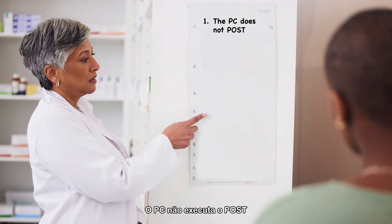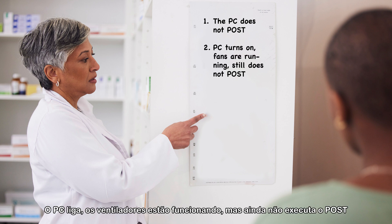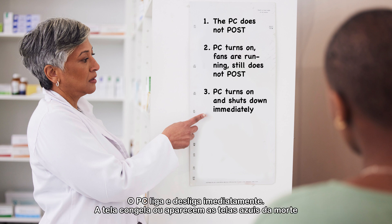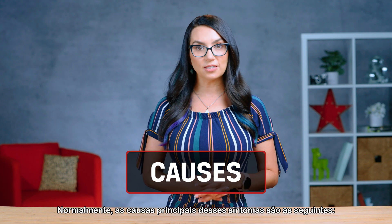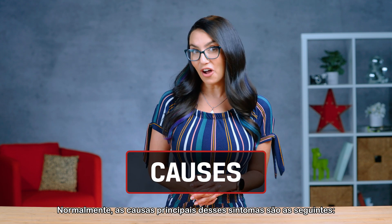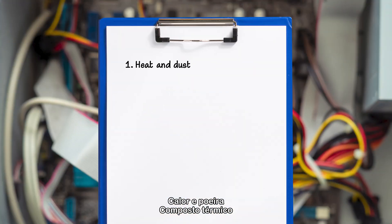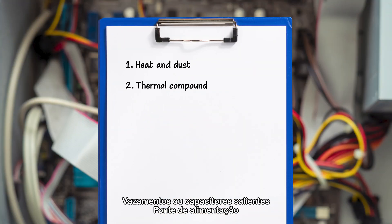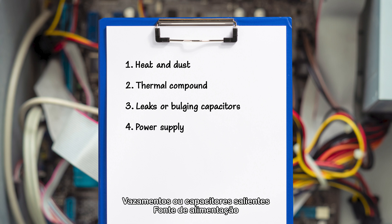Generally, based on those four causes, the symptoms will be exhibited by the CPU. They are: the PC does not post; the PC turns on and fans are running but it still does not post; the PC turns on and shuts down immediately; screen freezes; or blue screens of death. Typically, the root causes of these symptoms are: heat and dust, thermal compound, leaks or bulging capacitors, power supply, video card capacitors, and fan.